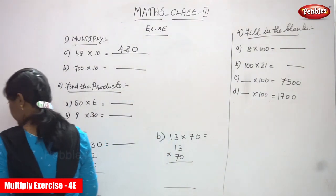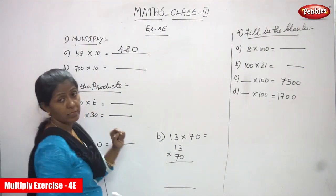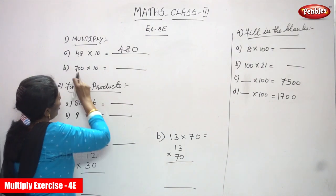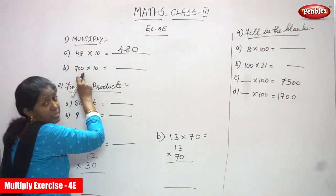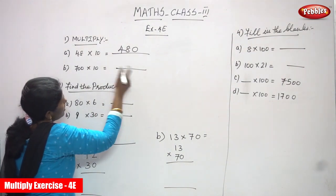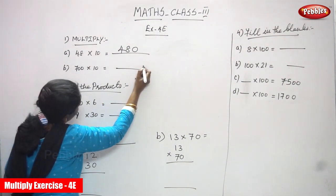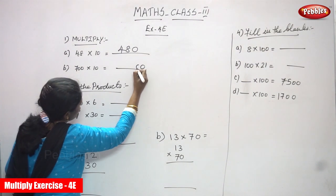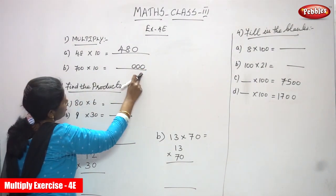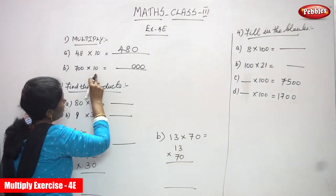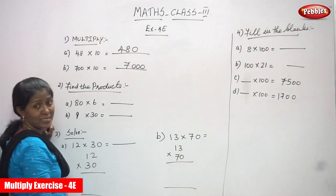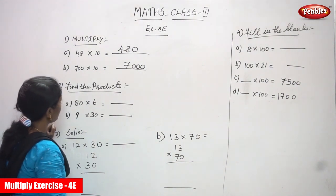Now the next one: 700 into 10. How many zeros? 100 has two zeros and 10 has one zero, so together that is three zeros. The remaining numbers: 7 into 1 is 7. So the answer is 7000. That is the right answer.